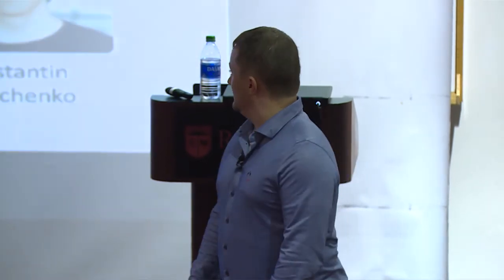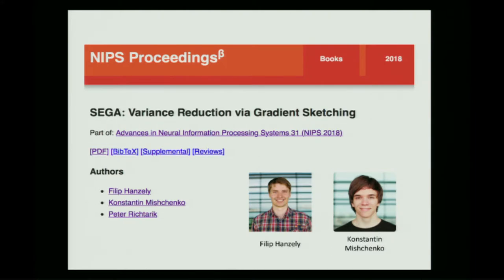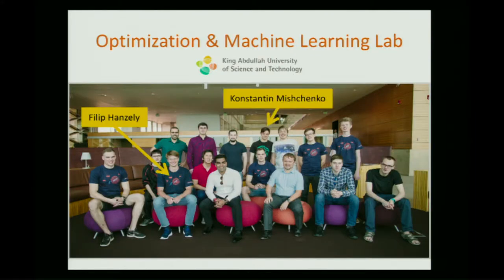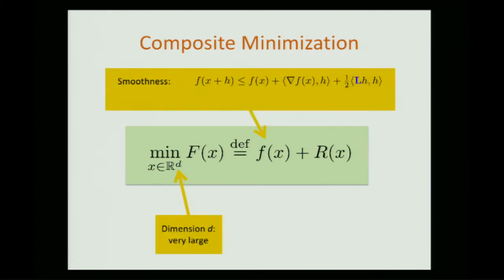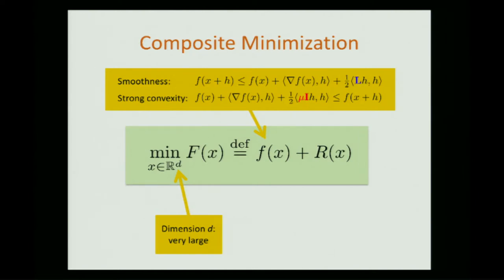The rest of the talk focuses on the first method, SEGA, developed with PhD students Philip Hansel and Konstantin Mischenko. We look at the problem of minimizing F + R over R^d, where F is L-smooth and mu-strongly convex. We assume a slightly non-standard version of smoothness where the Hessian of the quadratic upper bound is any positive semi-definite matrix L — important for comparing against state-of-the-art randomized coordinate methods. R is a convex closed regularizer.